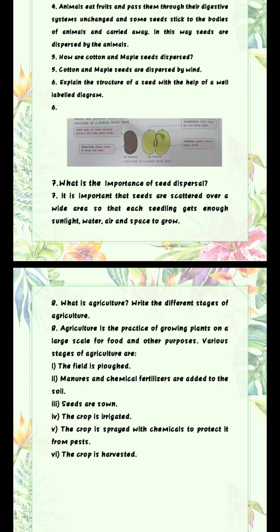Question 8: What is agriculture? Write the different stages of agriculture. Answer: Agriculture is the practice of growing plants on a large scale for food and other purposes. Various stages are: 1 — the field is plowed; 2 — manures and chemical fertilizers are added to the soil; 3 — seeds are sown; 4 — the crop is irrigated; 5 — the crop is sprayed with chemicals to protect it from pests; 6 — the crop is harvested.